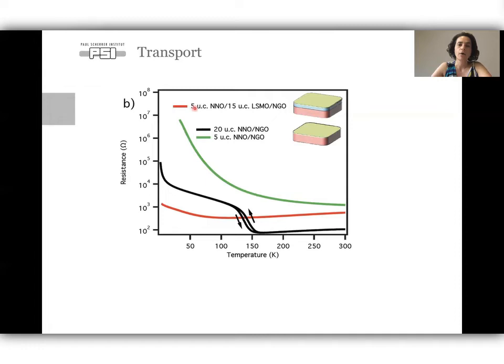And if you compare now with our bilayer, which is the five unit cells of NNO on 15 unit cells of LSMO, we have a very slight metal-insulator transition. We don't have this hysteresis and it's not so abrupt first-order transition as it is for the thick film. And also in transport, we are never completely sure if we're only probing the transport of the top layer.